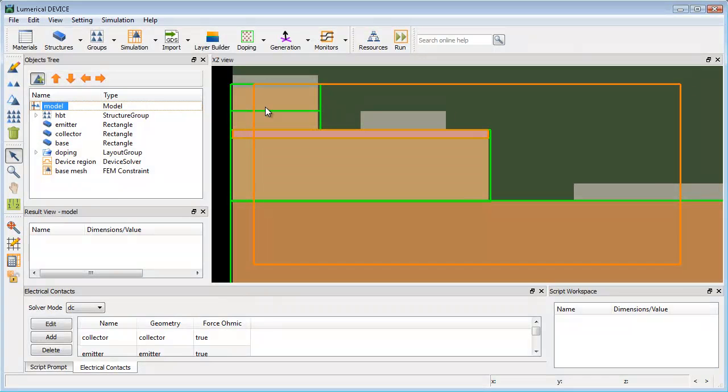To demonstrate the band structure monitor, I will start with the HBT structure in a device project layout. In this cross-section view, we can see the emitter, base, and collector layers of the HBT.